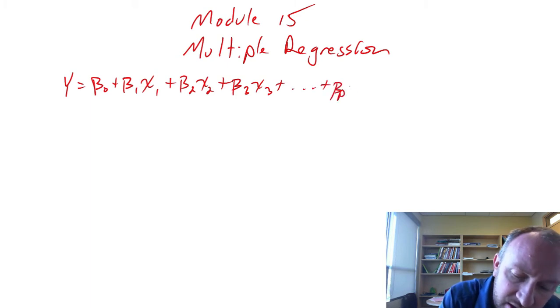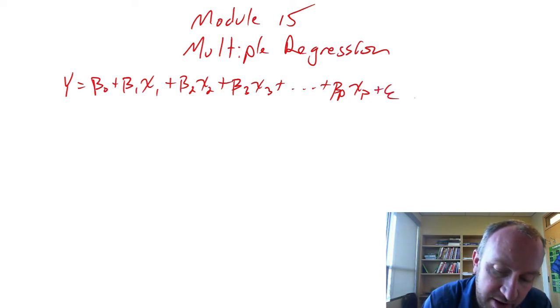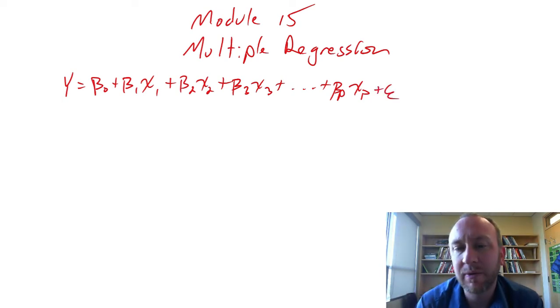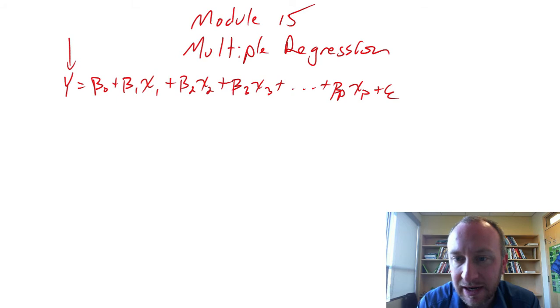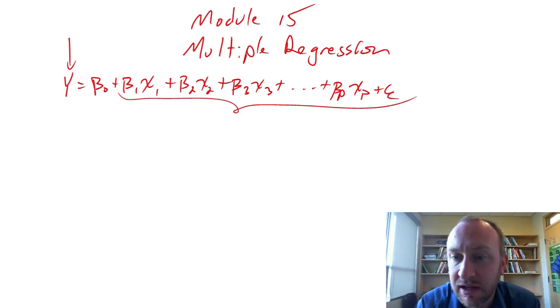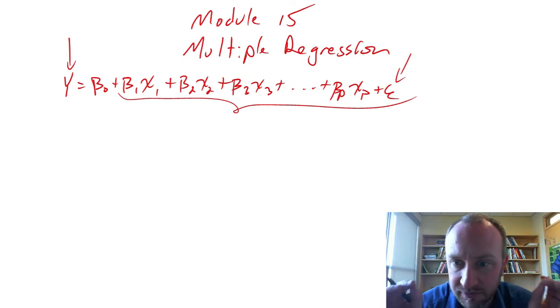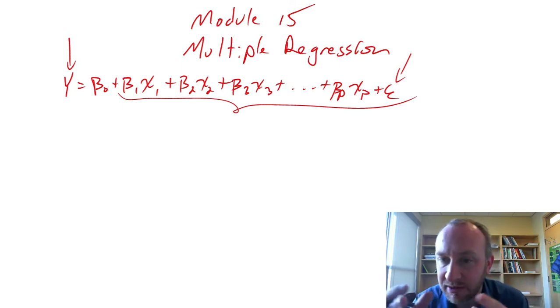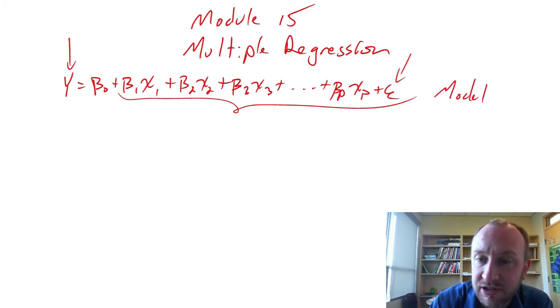So we can, let's just go out to xp and plus of course there's random error. So what we are doing now is we have some theory or we have some reason to believe that this dependent variable y can now somehow be explained or predicted by this set of independent variables. And again it's not a perfect linear function. There's random variation that exists within there as well. So again this is our regression model.